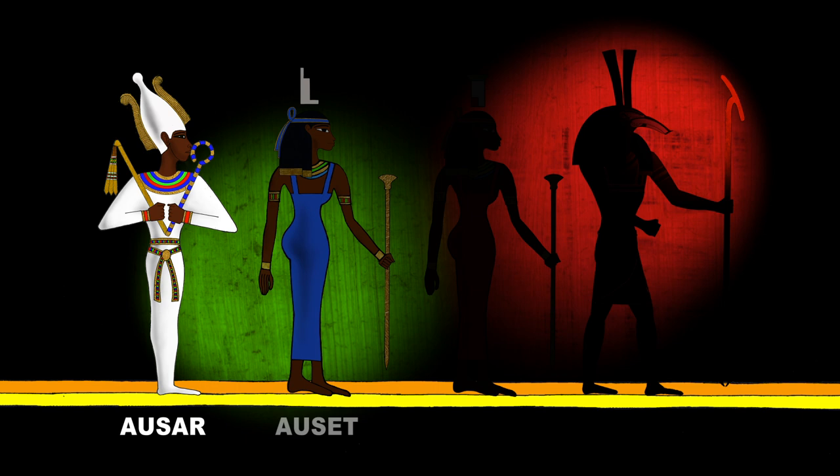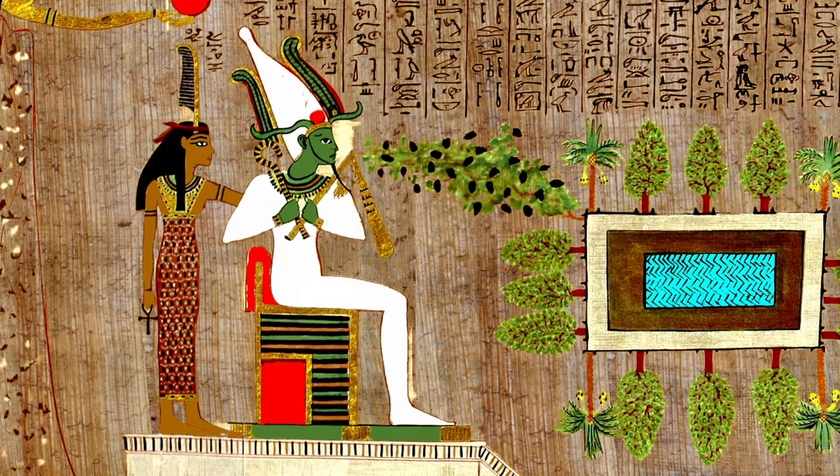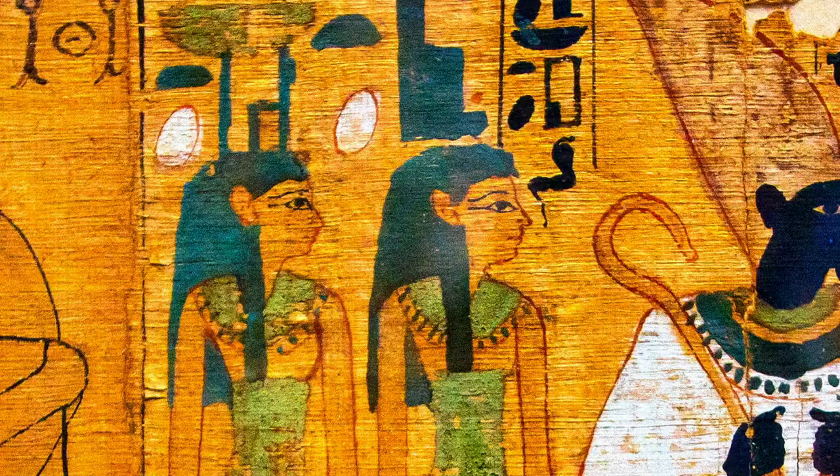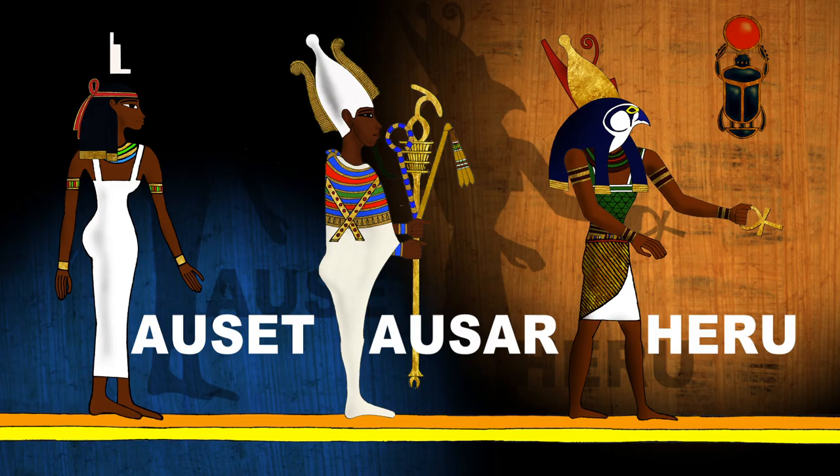Nut and Geb give birth to Asar, Aset, Nebetet, and Seton. Asar is the original father. Aset is determination and the original mother. Nebetet is the oracle reader — the one that can see things others cannot see. And Seton represents the forces that destroy. Seton, where we get the word Satan from, is not a bad thing — it's simply what exists as a destroyer. In life, sometimes in order to construct you must destruct, so there is a time for the destroyer, but the destroyer must come when needed.